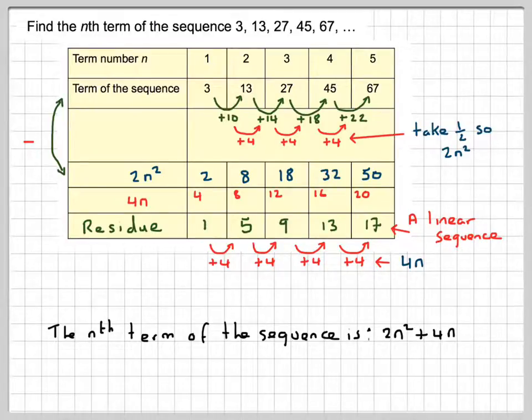And to go from 4 to 1, from 8 to 5, from 12 to 9, from 16 to 13, from 20 to 17, all we need to do is take away 3. Then all we need to do to this sequence here is take away 3. So this sequence, finding any term of the sequence, is 2n squared plus 4n minus 3.